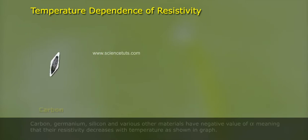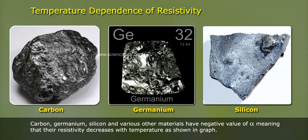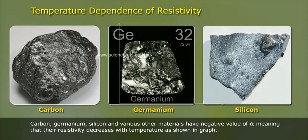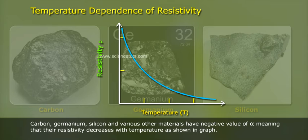Carbon, germanium, silicon and various other materials have negative value of α, meaning that their resistivity decreases with temperature as shown in graph.